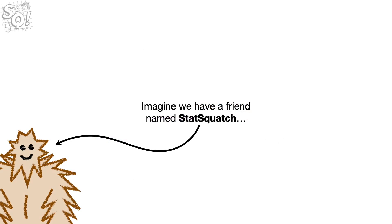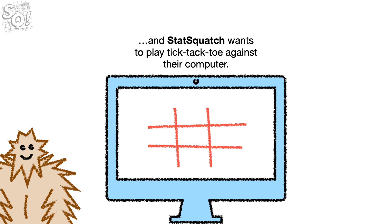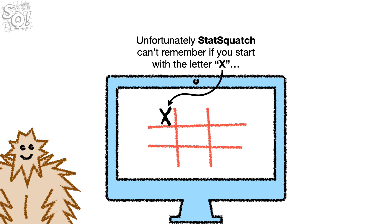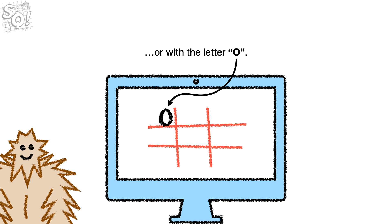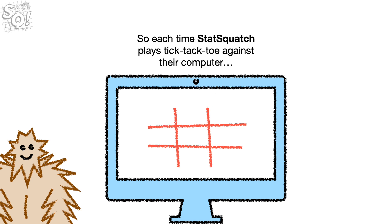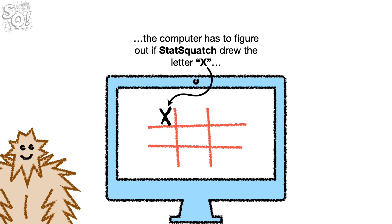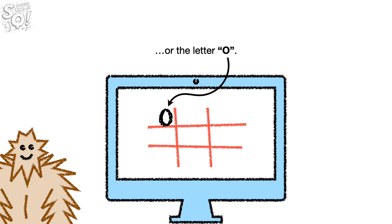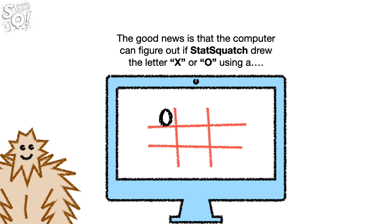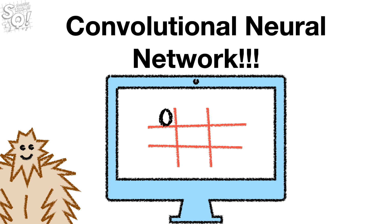Imagine we have a friend named Statsquatch. Statsquatch wants to play tic-tac-toe against their computer, but can't remember if you start with the letter X or the letter O. So each time Statsquatch plays tic-tac-toe against their computer, the computer has to figure out if Statsquatch drew the letter X or the letter O. The good news is that the computer can figure this out using a Convolutional Neural Network.